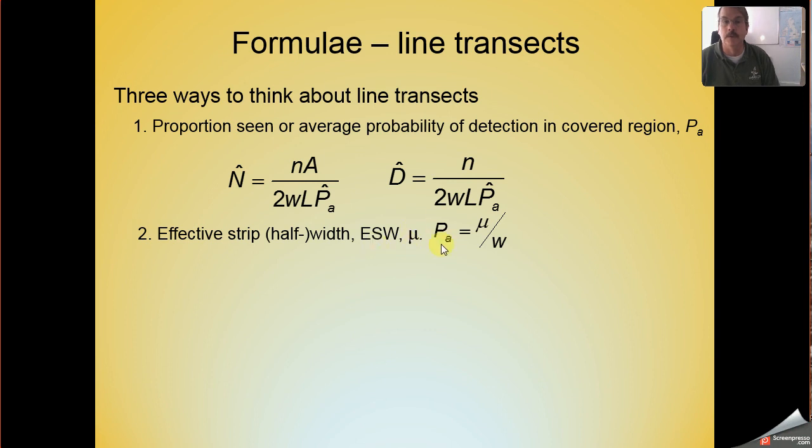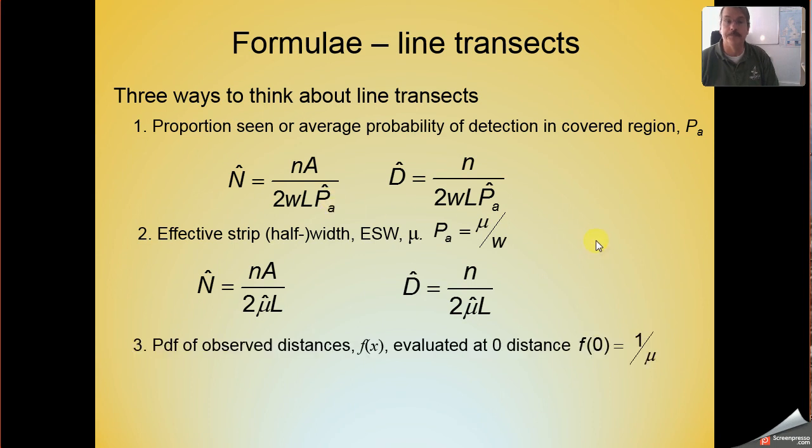The second formulation introduces the concept of mu, the effective strip width, and the relationship between mu and P sub a was depicted this way. We can insert that transformation into our previous equations and come up with these two equations that describe the way we would estimate abundance or density if we had estimated effective strip width in contrast to estimating P sub a.